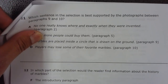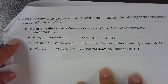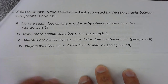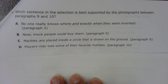Number 11. Which sentence in the selection is best supported by the photographs between paragraphs 9 and 10? A. No one really knows where and exactly when they were invented. Paragraph 2. B. Now more people could buy them. Paragraph 5. C. Marbles are placed inside a circle that is drawn on the ground. Paragraph 9. D. Players may lose some of their favorite marbles. Paragraph 10.